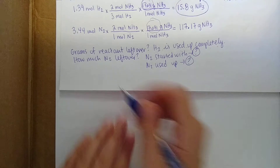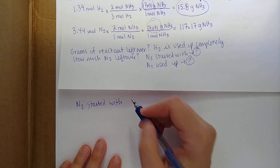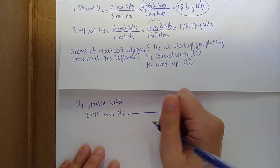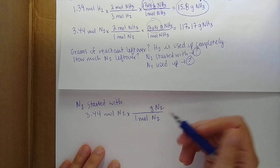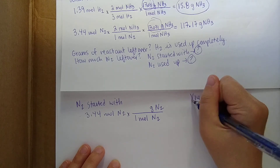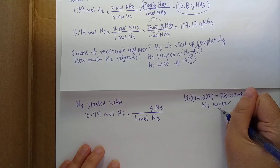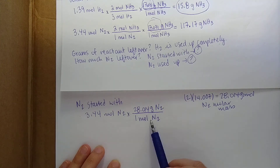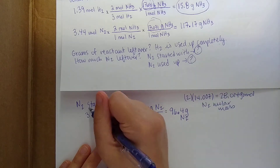First, let's figure out how much N2 we started with in grams. We convert the moles we had: we started with 3.44 moles of N2. For every 1 mole of N2, we use the molar mass from the periodic table. Nitrogen is 14.007, multiplied by 2 gives 28.014 grams per mole for N2. Plugging that in, 3.44 moles times 28.014 equals 96.4 grams of N2 — this is how much we started with.